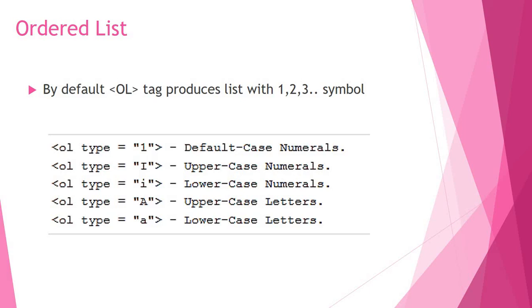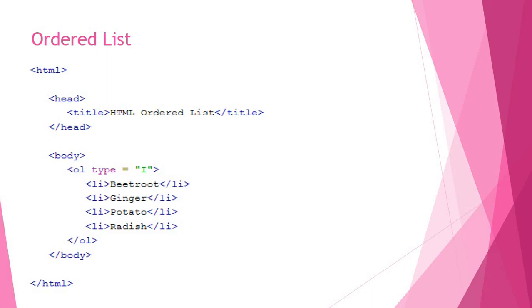Here is an example of an ordered list. Beginning with the html, head, title tags — common to all programs — then body, and ol with type equal to uppercase I, meaning the list will use uppercase Roman numerals. The list items are defined and then the ol tag is closed, followed by body and html.